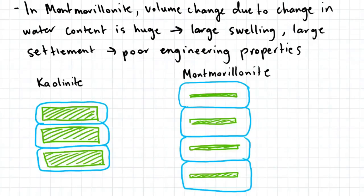Note that for montmorillonite, the volume change due to change in water content is huge. And this results in large swelling and large settlement, which are poor engineering properties. So we look at this comparison between kaolinite and montmorillonite. When we apply a load to a clay soil that is comprised predominantly of kaolinite crystals, when the water disperses, the volume change isn't too dramatic.